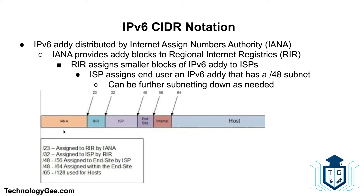The IANA creates the IP addresses, then passes them to a regional group who adds their block for identification, then to the ISP who adds their block, and finally down to the end user. The end user then begins creating their own network, subnets it out, and assigns IP addresses from the remaining host bits to devices within their network.